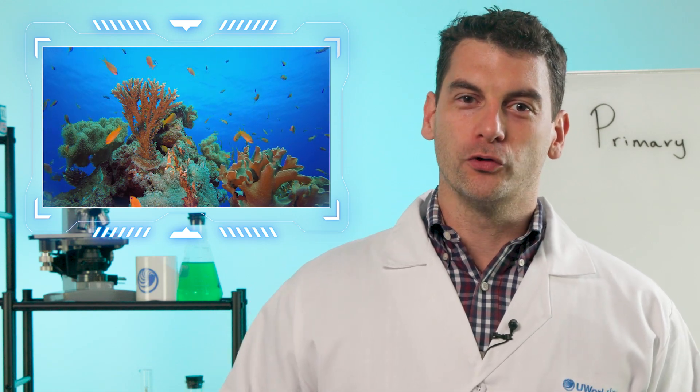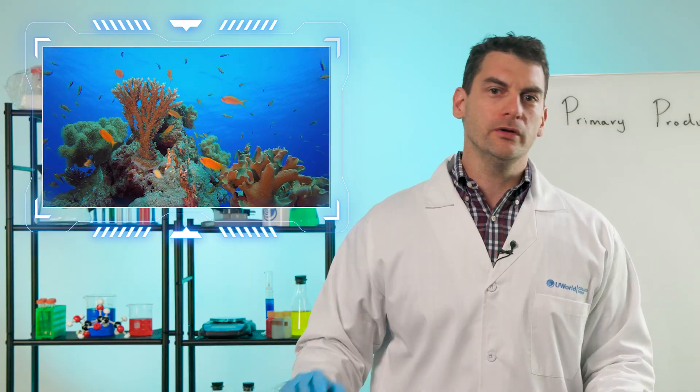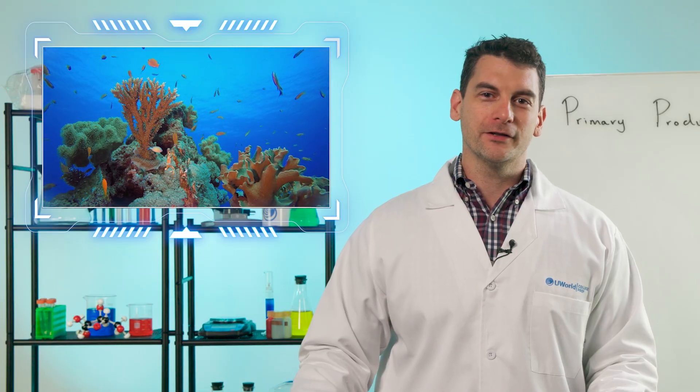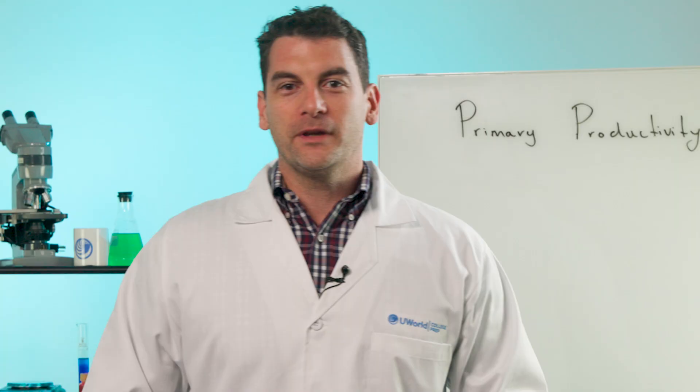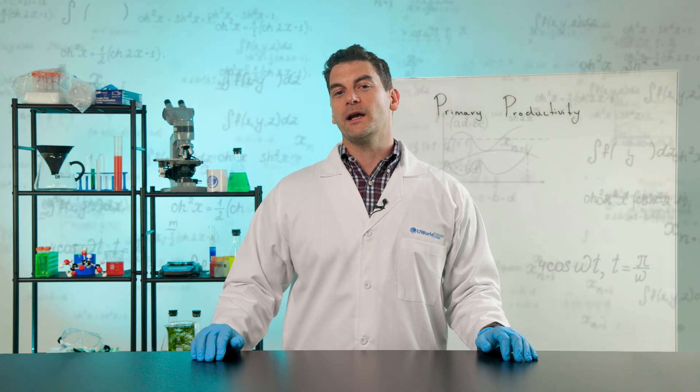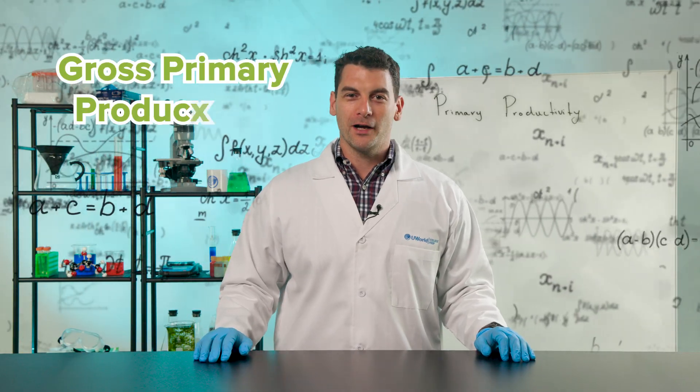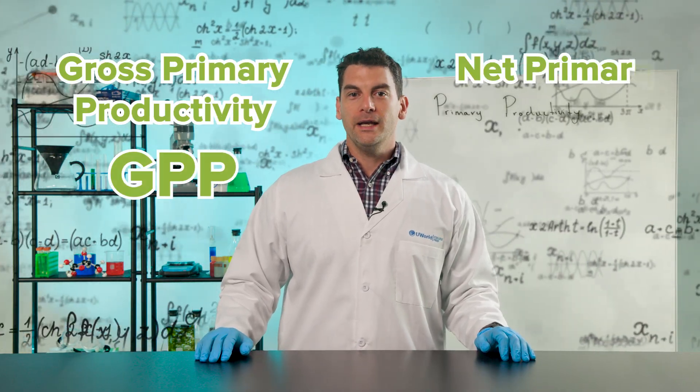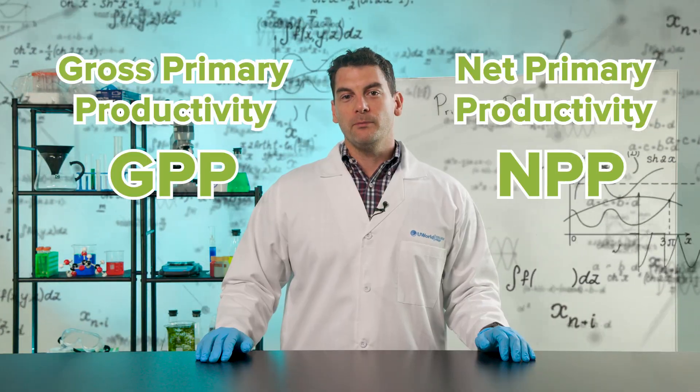Ever wonder how the underwater world really thrives? What if I told you that the secret to a vibrant aquatic ecosystem lies in something you might overlook every single day? Get ready to dive deep into this AP Environmental Science experiment. We'll explore how aquatic plants snag and stash energy and how we measure that incredible process by calculating Gross Primary Productivity, or GPP, and Net Primary Productivity, or NPP.